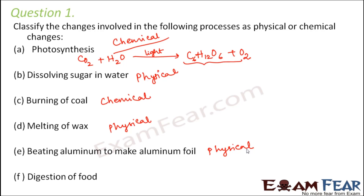Digestion of food — when food gets digested it is broken down into simpler forms, so it is changing chemically. Complex carbohydrates are broken down into simple sugars, proteins are broken down into amino acids, fats are broken down into fatty acids, and so on. So digestion of food is a chemical change.